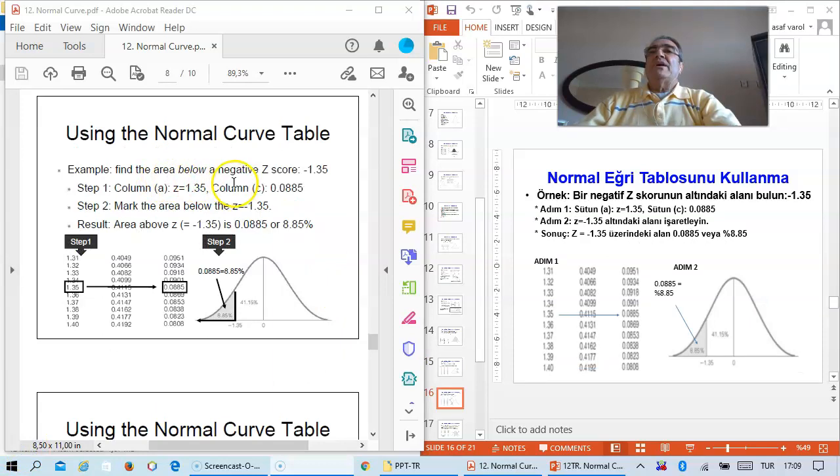Find the area below a negative z-score of minus 1.35. Step 1: Mark the z-score location and read from column C. Step 2: Mark the area to the left of minus 1.35. The area value is 0.0885, or 8.85%.